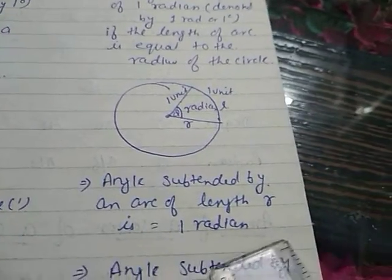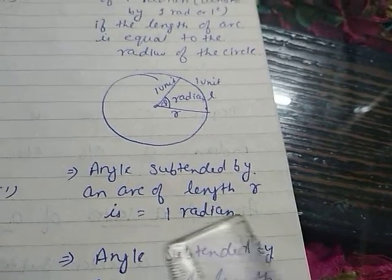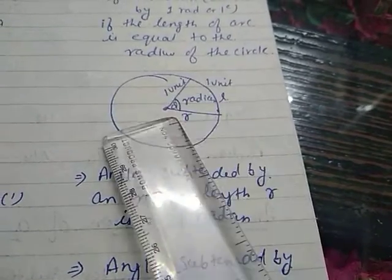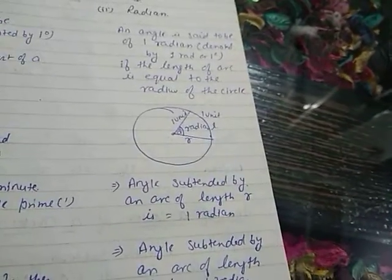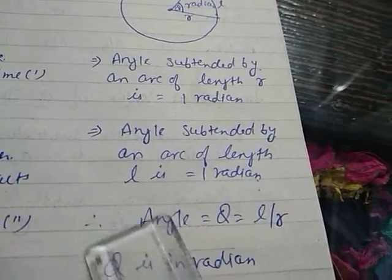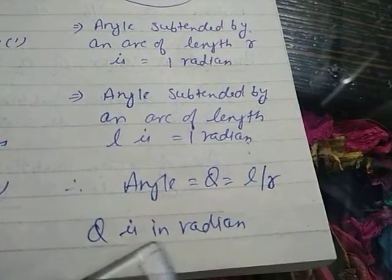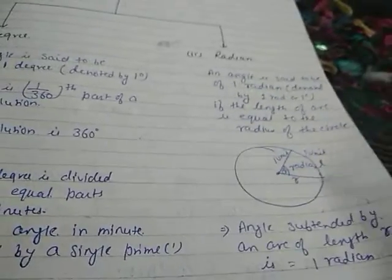The angle subtended by an arc of length r is equal to one radian. The formula is θ = l/r. So r/r = 1, and that is your radian measurement. Therefore angle θ = l/r, where θ is in radians. So there are two types of measurement: degree measure and radian measure.